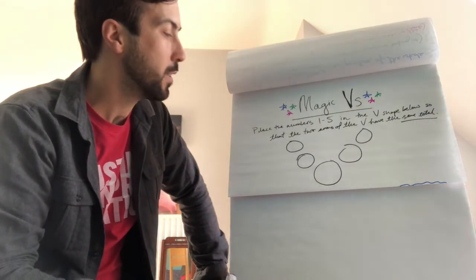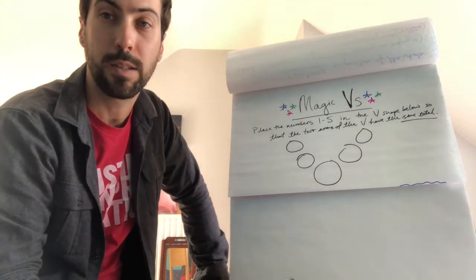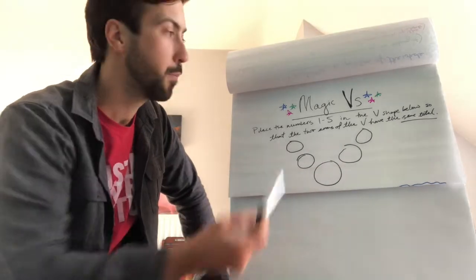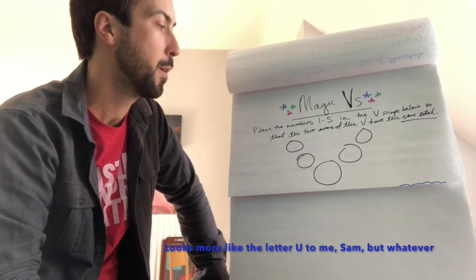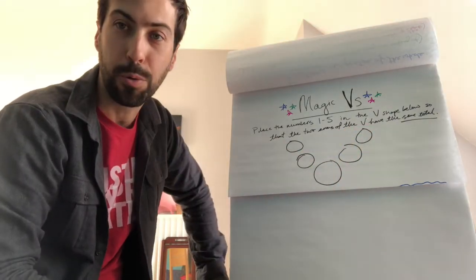So the idea of Magic V is that you place the numbers, in this case, place the numbers 1 through 5 in this V shape below, in these circles that form a V shape, so that the two arms, here's one arm, have the same total.